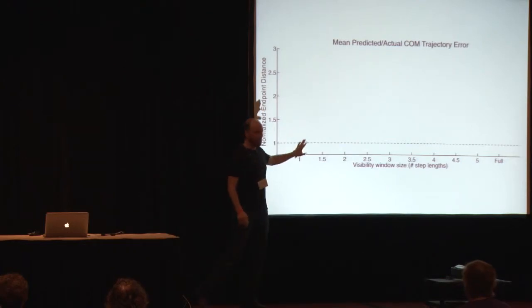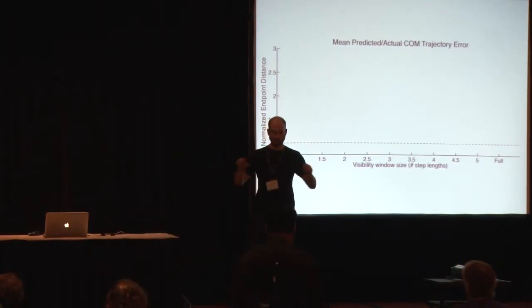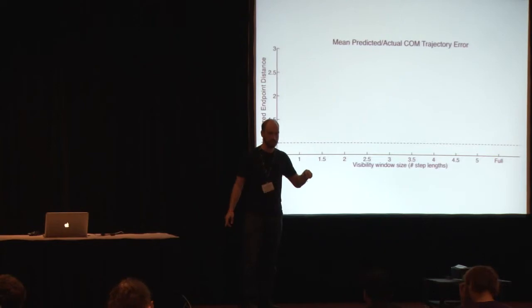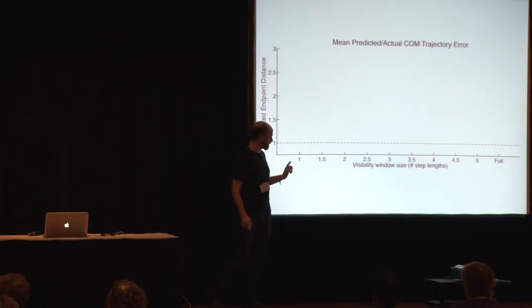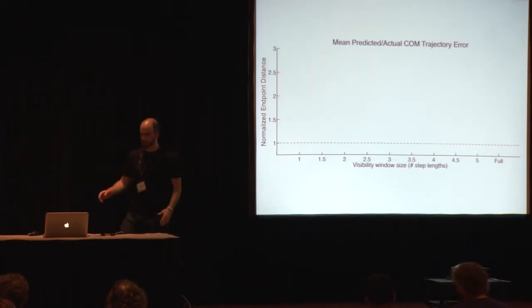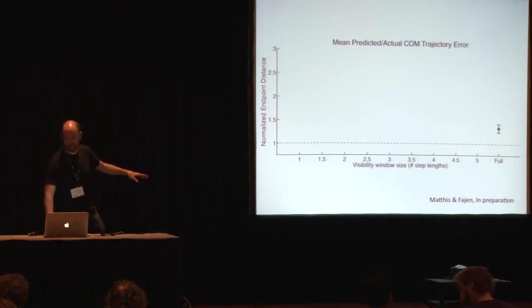This is going to show the error between the predicted center of mass trajectory of the idealized passive pendulum and the actual subject's center of mass trajectory during a step. Y axis is the endpoint error normalized by walking in an obstacle-free condition. X axis is the size of the visual window, how far ahead they can see as they perform this task. The full vision condition, you can see the entire field of obstacles.